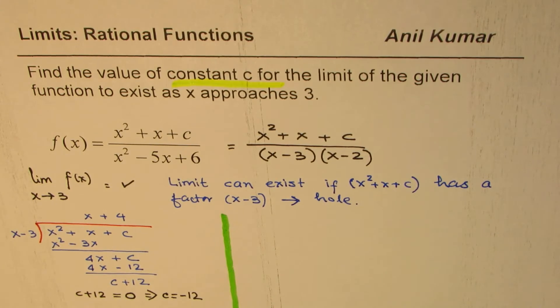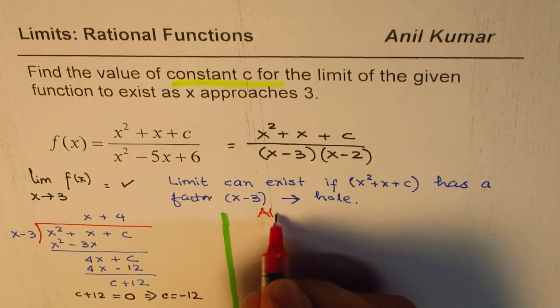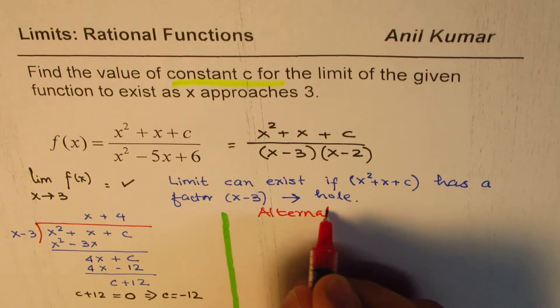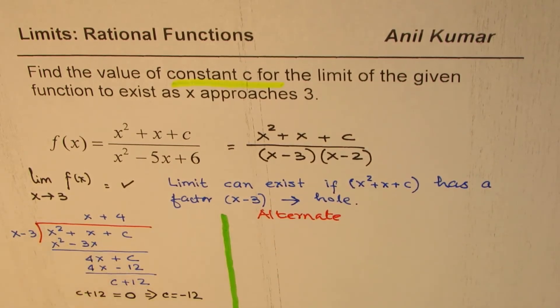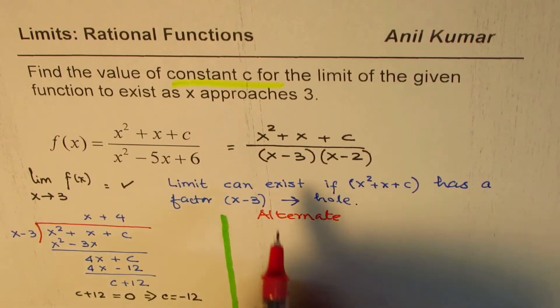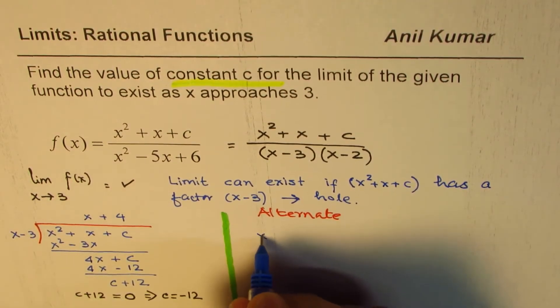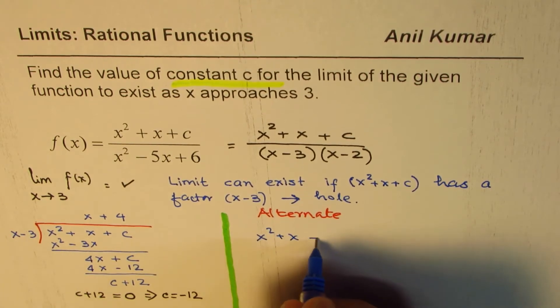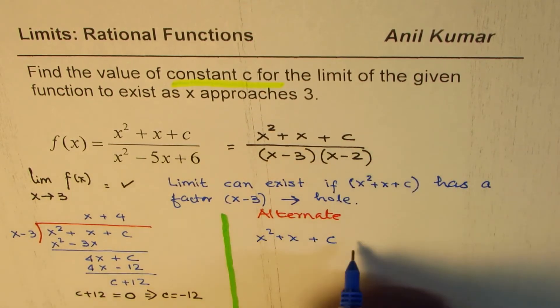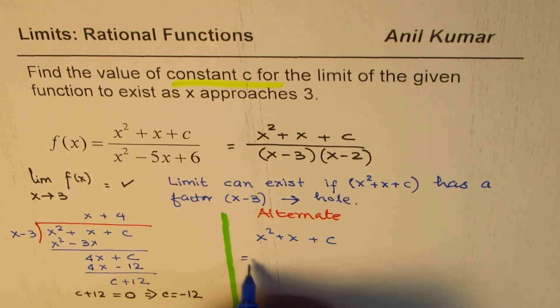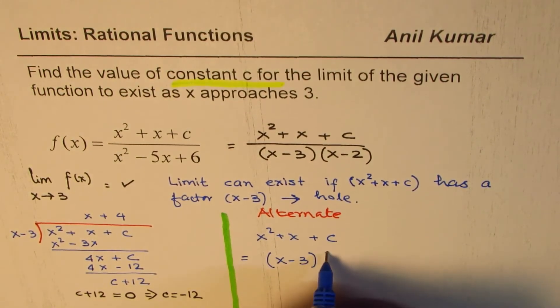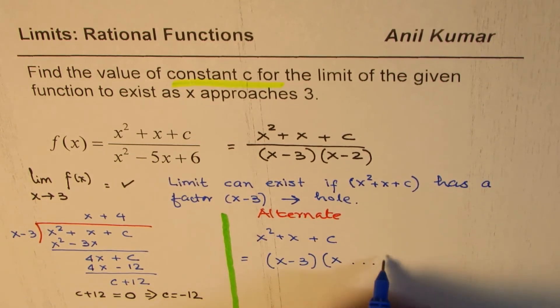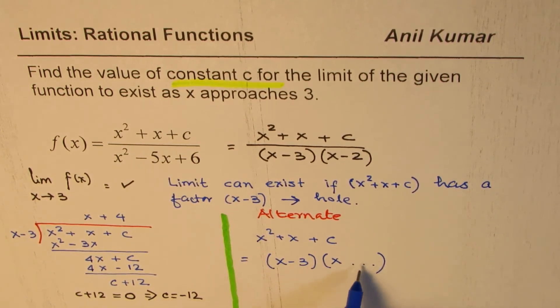Alternate method, which I'll prefer, and which can be used by many students who are not aware of this division process, is kind of simple. We have this term x squared plus x plus c in the numerator. We want to factor, and we know x minus 3 should be one of the factors. What is the other factor? This is what we want to know. From here, we can get c.